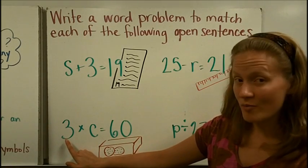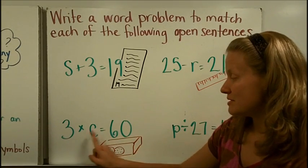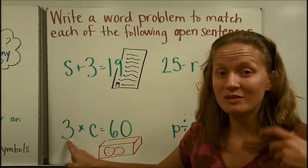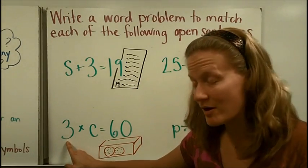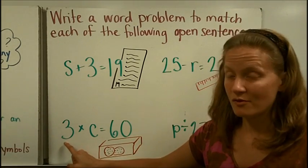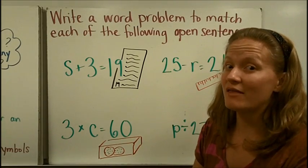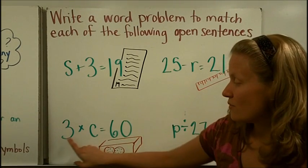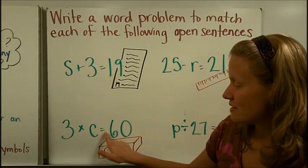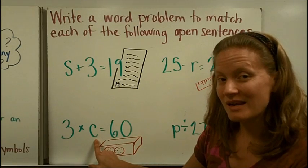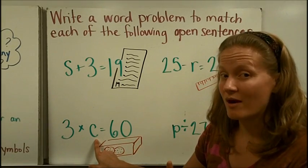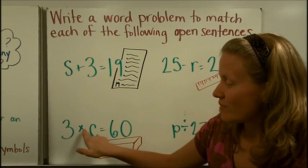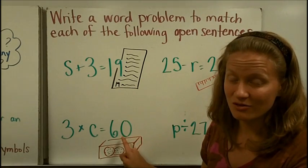We could use the open sentence 3 times C equals 60. We could say that some students brought in some cookies for Halloween party, and there were three boxes of cookies. When we dumped them all together, we found out that there were 60 cookies. So we could use 3 times C equals 60, where C equals the amount in one box. If we multiplied the amount in one box times 3, that gave us 60 cookies altogether.